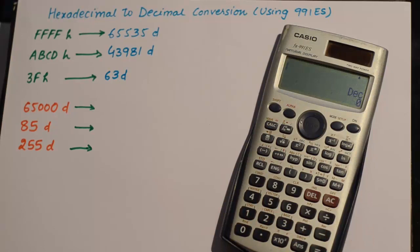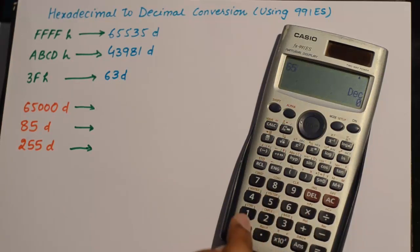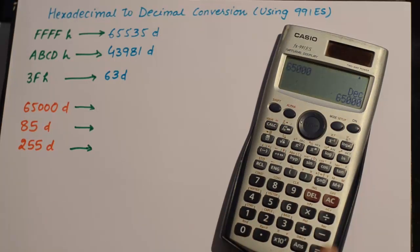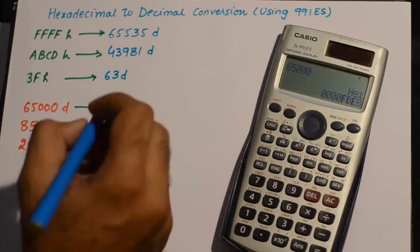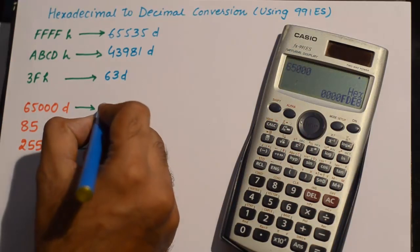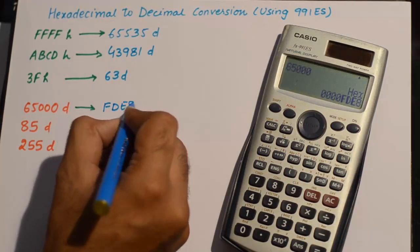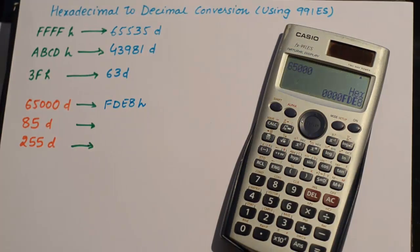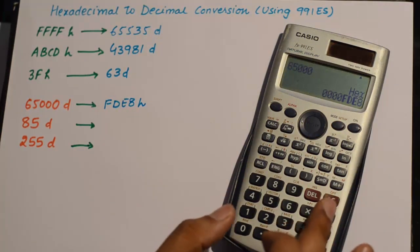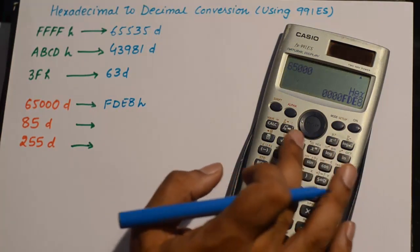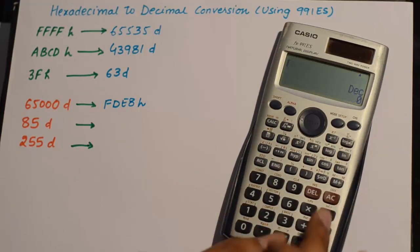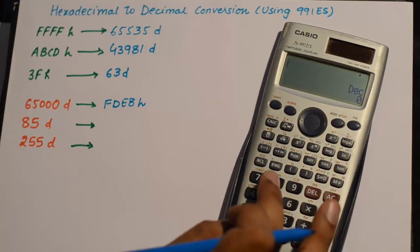Now I want to convert decimal numbers into hexadecimal. I'll write down 65000 and click on hex — it turns out to be FDE8H.